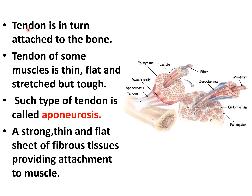The tendon is in turn attached to the bone. The tendon of some muscles is thin, flat, and stressed but tough, and such a tendon is known as an aponeurosis — a strong, thin, flat sheet of fibrous tissue providing attachment to the muscle.